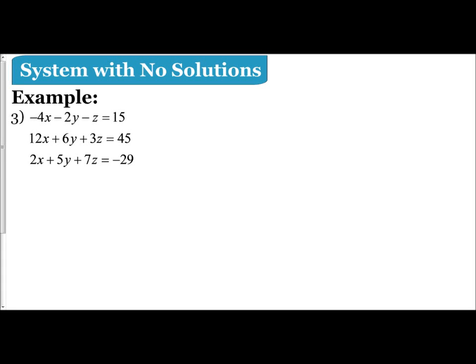The following video will examine what a no-solution answer looks like for a system of inequalities in three variables. So we have this system: -4x - 2y - z = 15, 12x + 6y + 3z = 45, and 2x + 5y + 7z = -29.